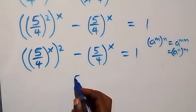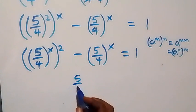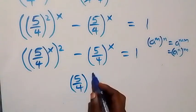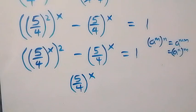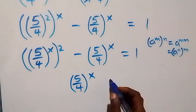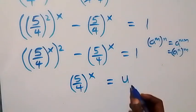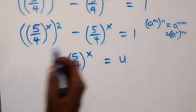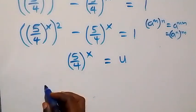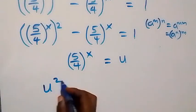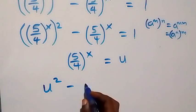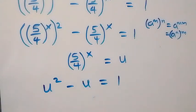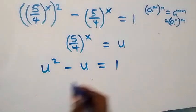Now we have (5/4) raised to power x common here. Let a letter represent this — let this equal u. So this equation becomes u squared minus u equals 1.